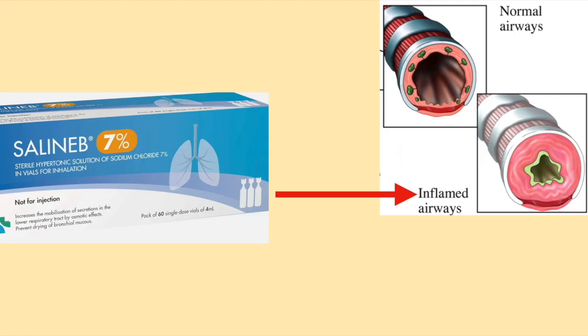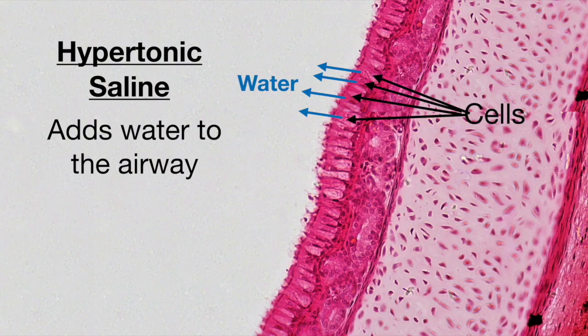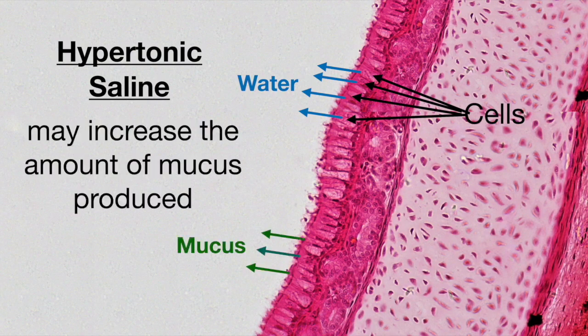However, hypertonic solutions of sodium chloride cause irritation to the airways. This may in turn cause the airways to produce more mucus, and now a conundrum has been created. Although the hypertonic saline adds water to the airway, it may also increase the amount of mucus produced, which in turn may make clearing the airways more difficult. Please consult with your medical provider to discuss if you should use normal saline or hypertonic saline.